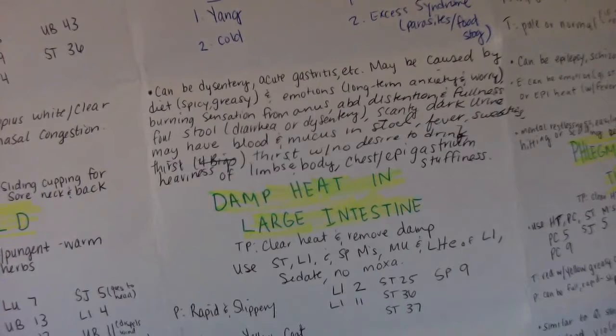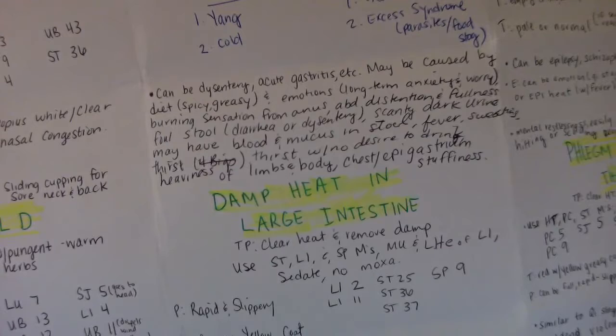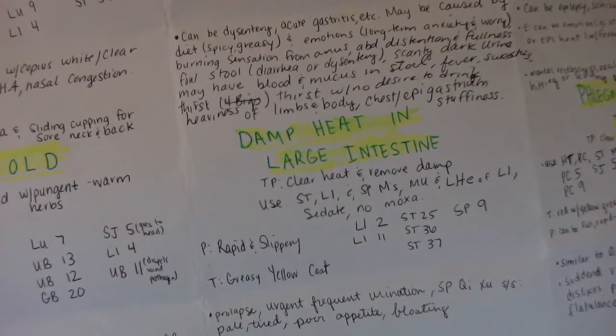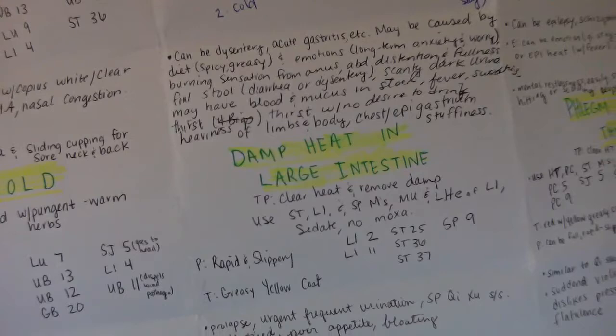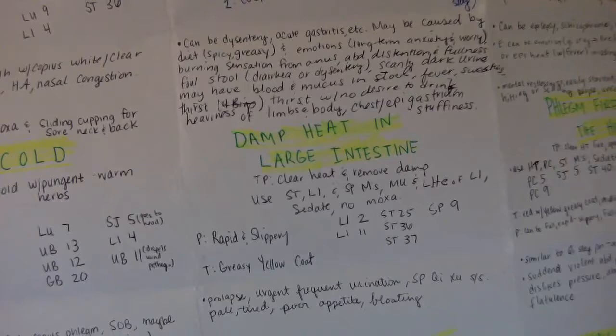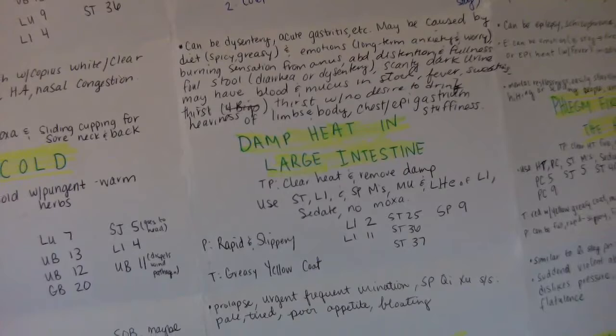Burning sensation from anus, abdominal distension and fullness, foul-smelling stool, can be diarrhea or dysentery. Scanty dark urine, may have blood and mucus in the stool, fever, sweating, thirst without desire to drink, heaviness of limbs and body, chest and epigastric stuffiness.